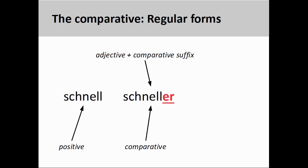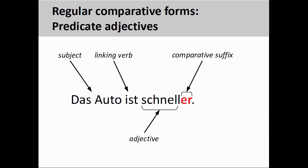So how does German form the comparative of adjectives? As in English, the comparative form of an adjective is constructed by adding the comparative suffix '-er' to the positive form of an adjective. As you see on the screen, the comparative form of the adjective 'schnell,' meaning 'fast' in German, is 'schneller.' You can use the comparative as a predicate adjective, which is simply an adjective that follows a linking verb and modifies the subject of the sentence. The sentence 'das Auto ist schneller' means 'the car is faster.'